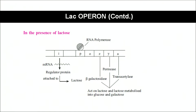In the presence of lactose, the regulator protein synthesized by the I gene attaches to the lactose. Once it binds to lactose, it is not free and cannot bind to the operator region. With the operator free, RNA polymerase can bind to the promoter and transcription of Z, Y, and A genes takes place. Z produces beta-galactosidase enzyme, Y produces permease, and A produces transacetylase. All three enzymes work together in the uptake of lactose into the cell and the metabolism of lactose into glucose and galactose.